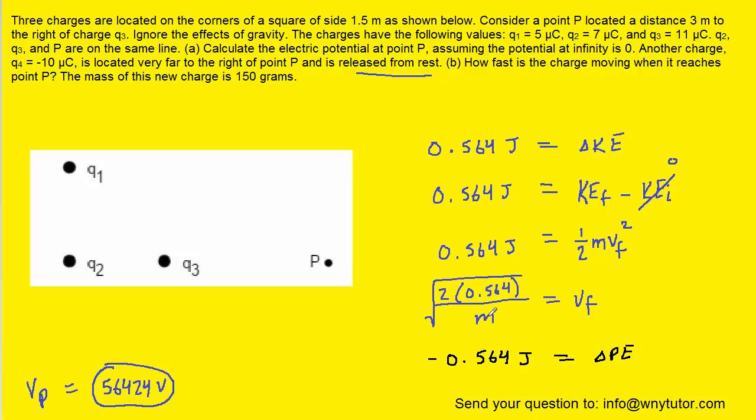Now, the mass was given to us, it was given as 150 grams. We'll have to convert that to the standard unit of kilograms, which is 0.15 kilograms. So let's plug that in for the mass M. And when we compute this, we should get approximately 2.75 meters per second. So this would be the correct answer to part B of the question.